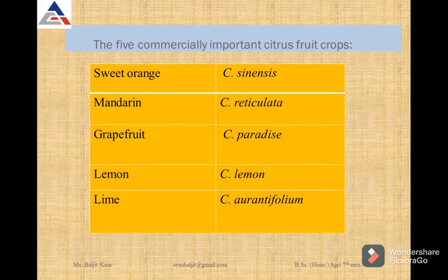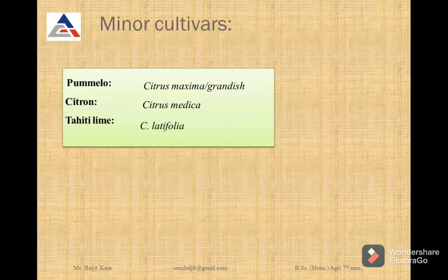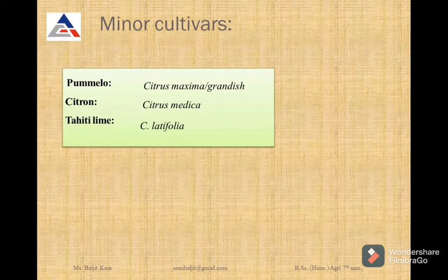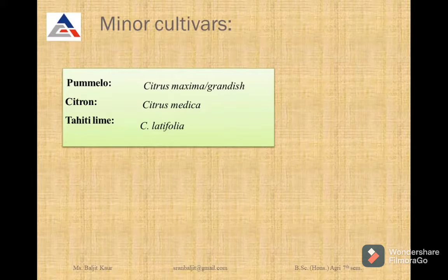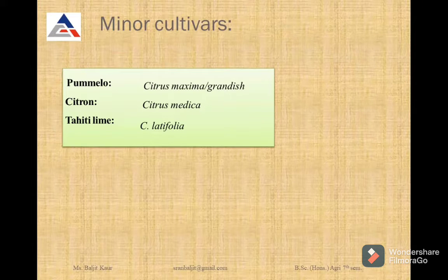The major five groups of citrus are: Sweet Orange, Mandarins, Grapefruit, Lemon, and Lime. The minor cultivars of citrus include Pomelo — scientific name Citrus maxima or Citrus grandis — Citron with the scientific name Citrus medica, and Tahiti Lime with the scientific name Citrus latifolia.